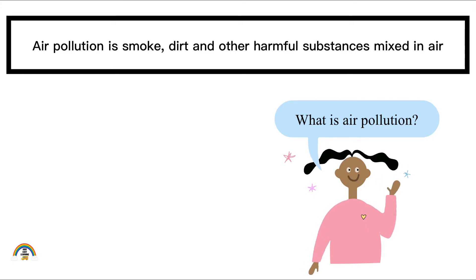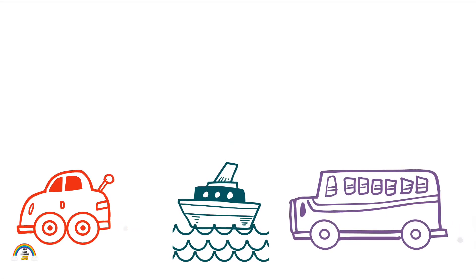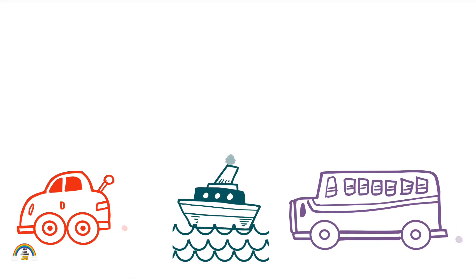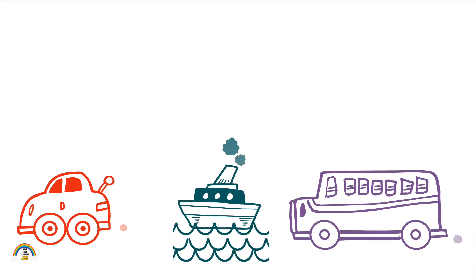A little confusing, right? Let's make it more simple. You can see a car, a ship, and a bus, and they are emitting smoke.